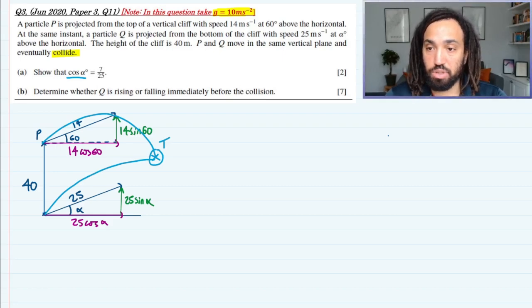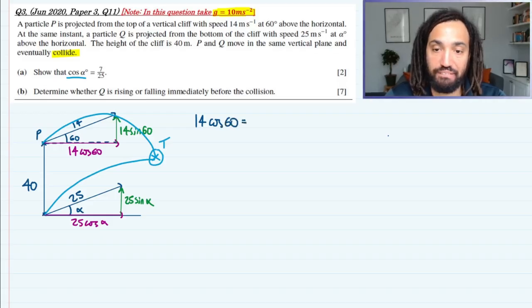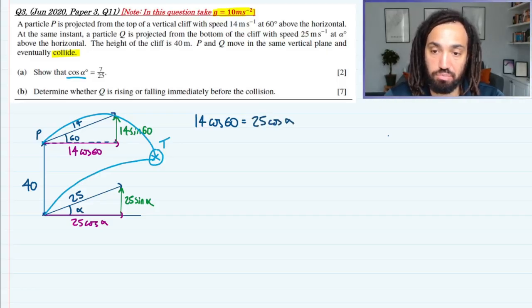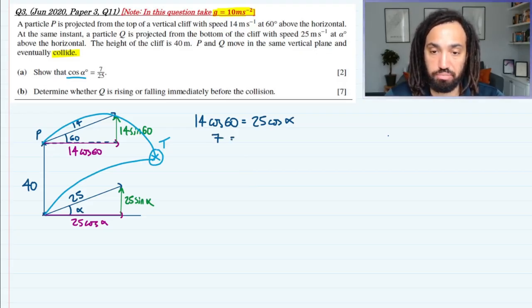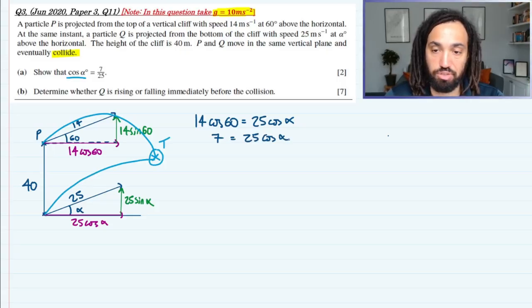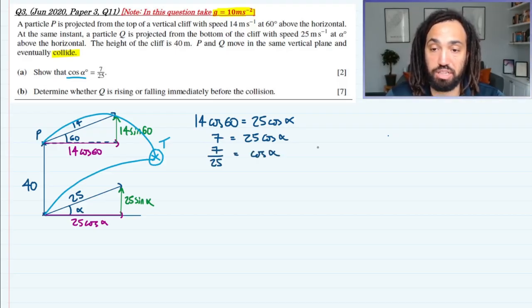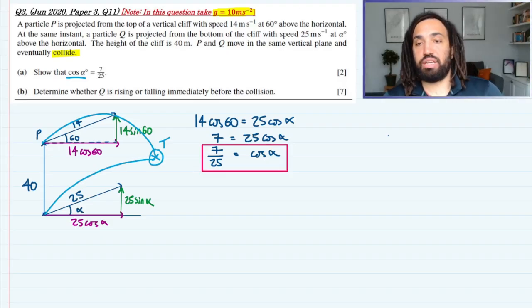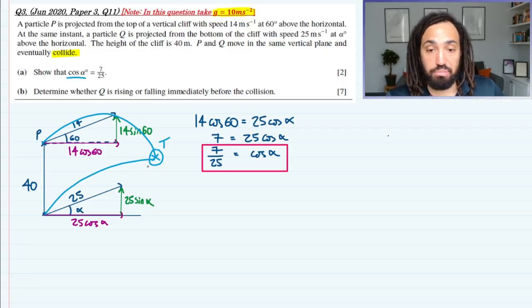So in order to solve this question, we just need to equate the two horizontal speeds. So we get 14 cos 60 equals 25 cos alpha. 14 cos 60 is just 7, and that equals 25 cos alpha. Divide through, we get 7 over 25 is equal to cos alpha, and that's perfect. Great, and that's all because the horizontal velocities stay constant and they must be the same in order for them to meet.